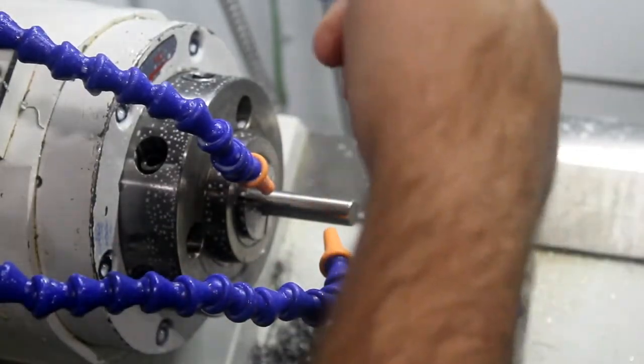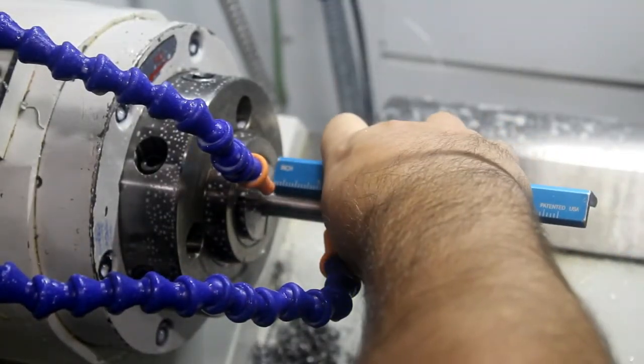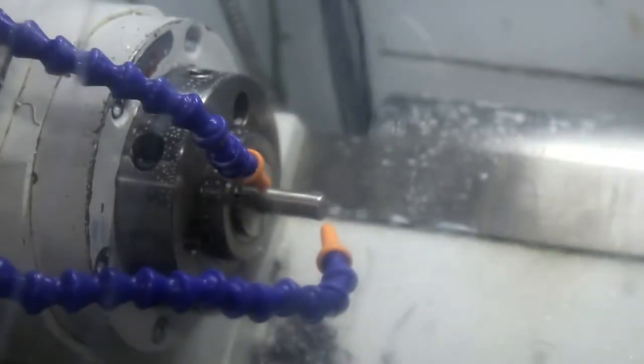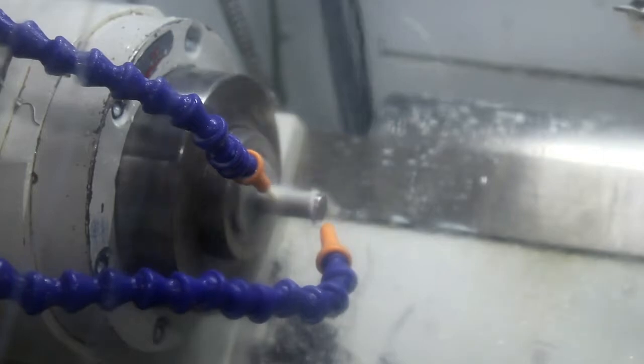As you can see from my brother's finger here, you need to be really careful pulling swarf off a drill, even if the drill is not spinning. It can be really sharp, especially stainless.